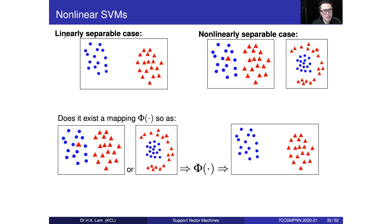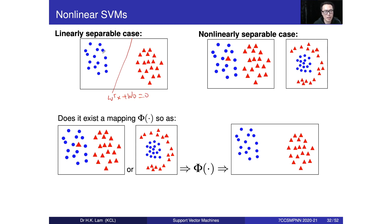Previously, we talked about the linearly separable case. We have two cases — dot and triangle — and we can simply draw a straight line. That straight line, WTX plus W-naught equals zero, is the hyperplane. We can separate these two cases 100% correctly.